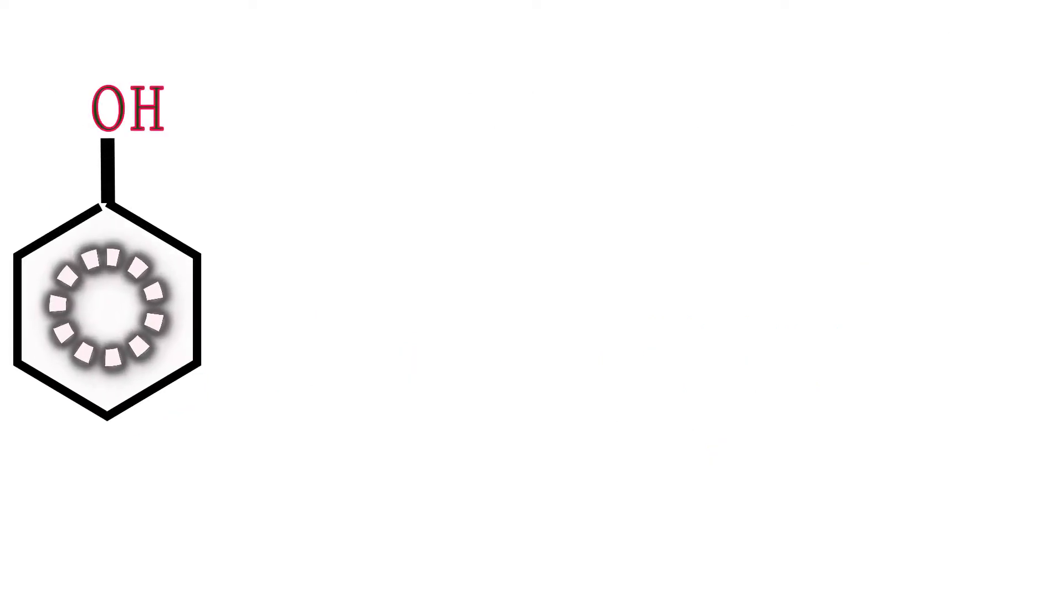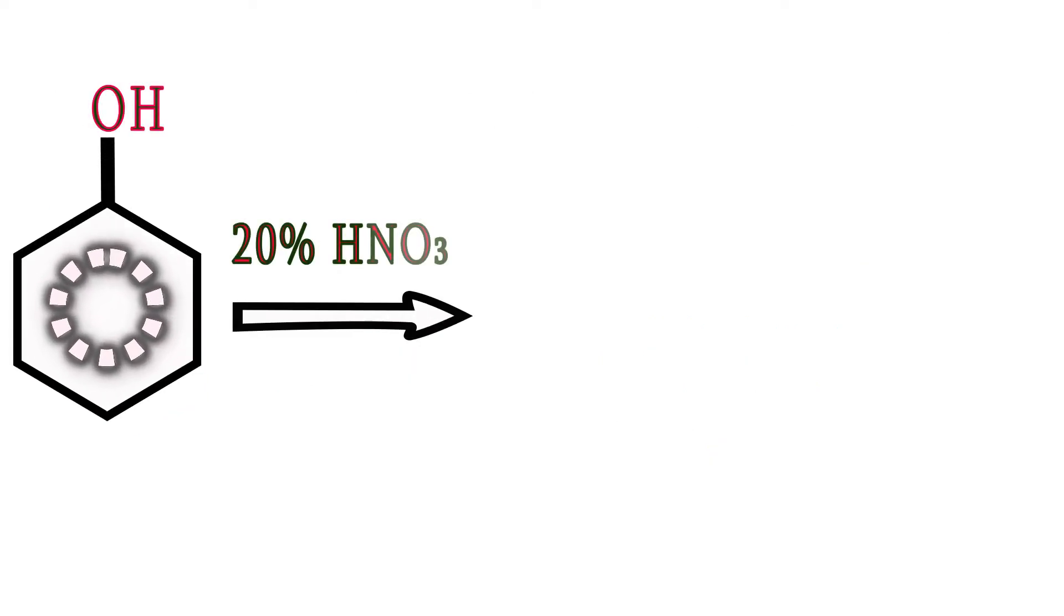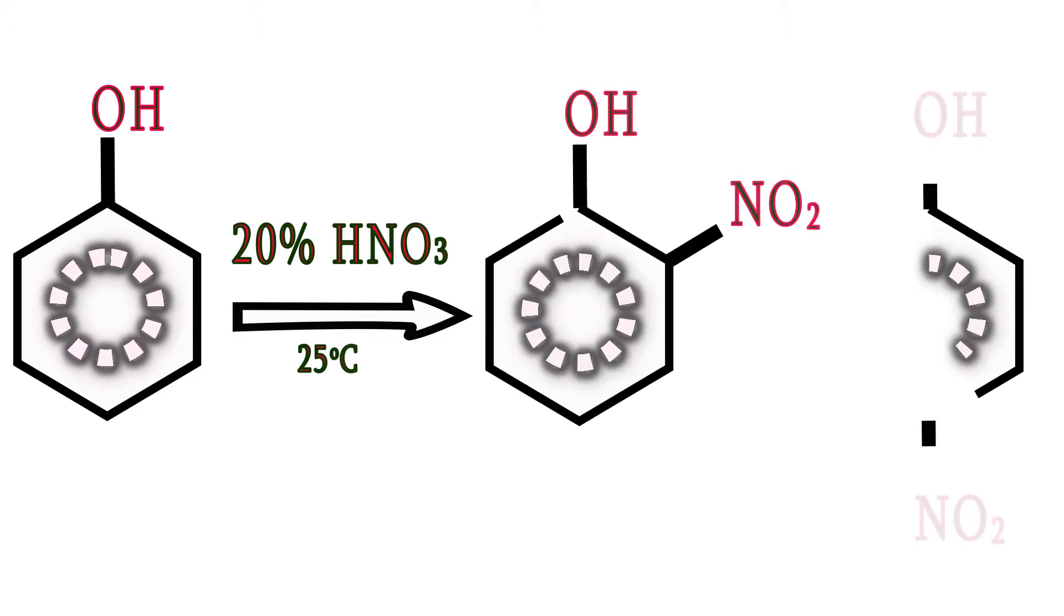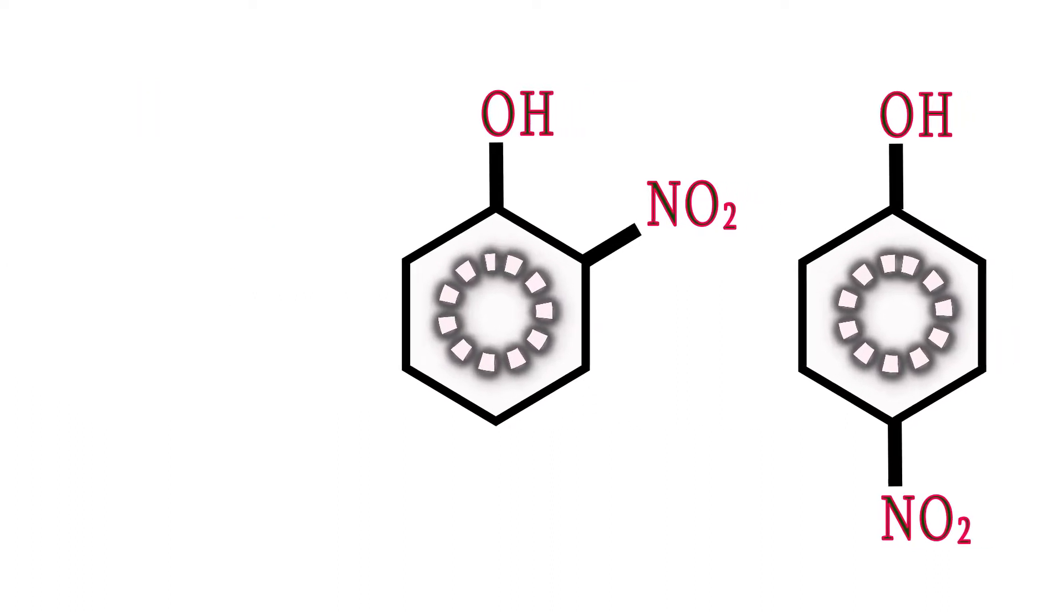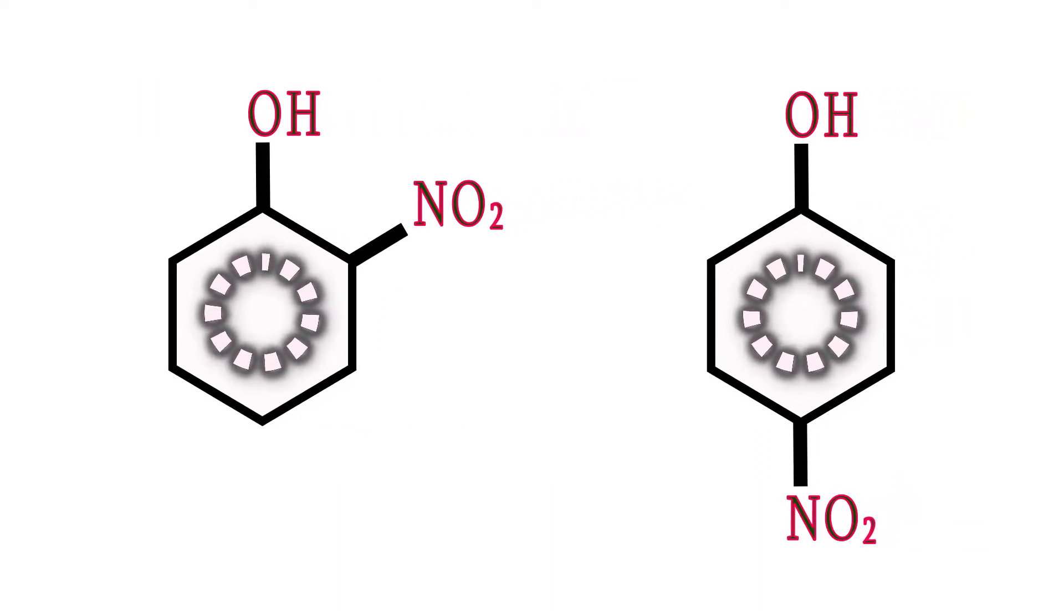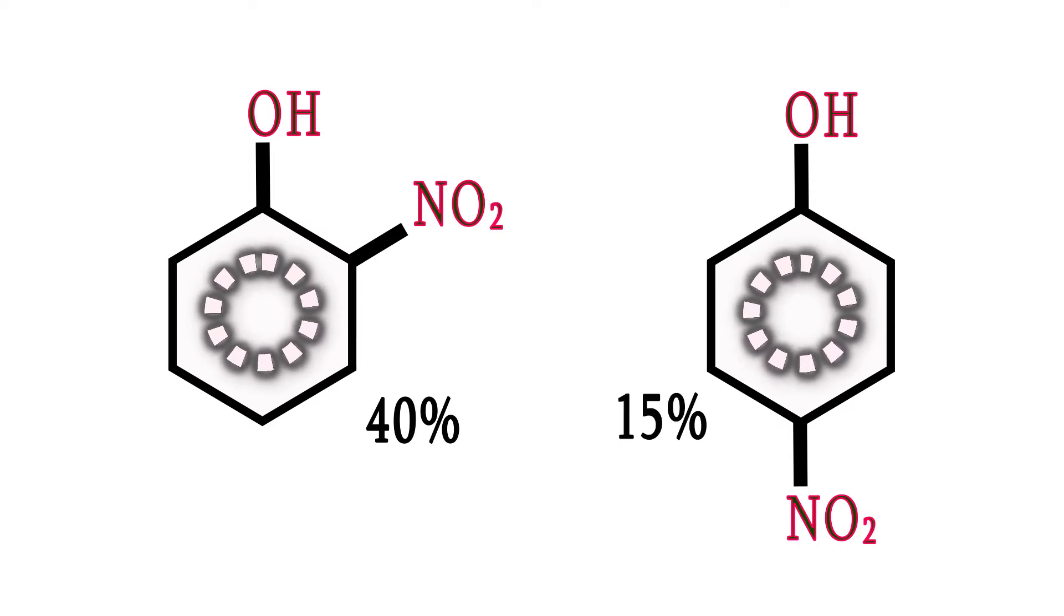Phenol reacts with diluted nitric acid at 25 degrees Celsius to yield a mixture of ortho and para nitrophenol. Yield will be relatively low because of the oxidation of the ring. Ortho nitrophenol yield will be approximately 40% and para nitrophenol yield will be 15%.